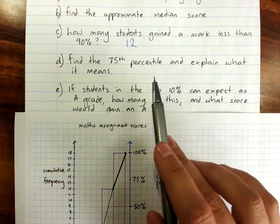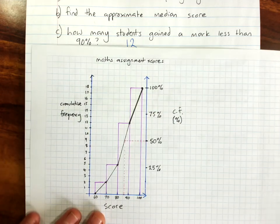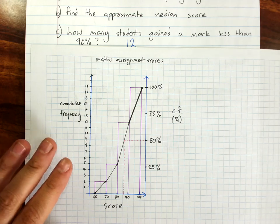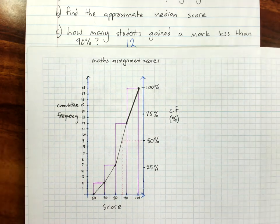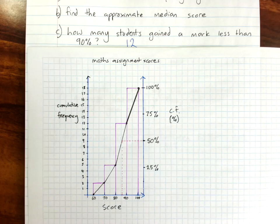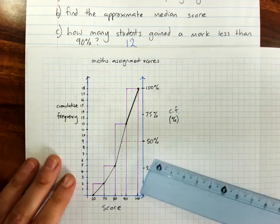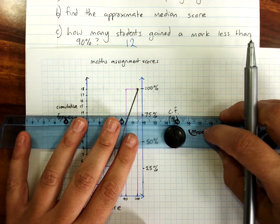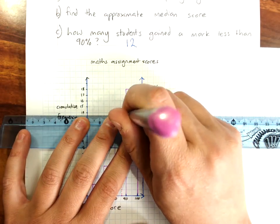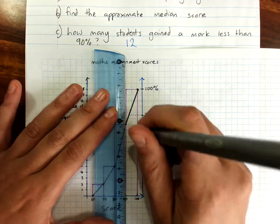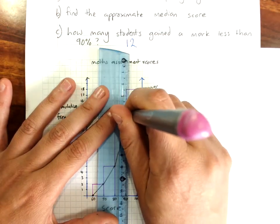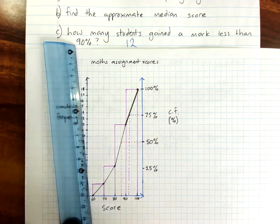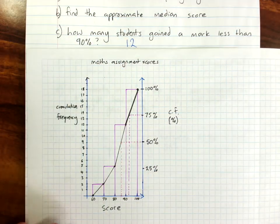Find the 75th percentile and explain what it means. So, the 75th percentile is, where's my ruler going? You find out what score that equates to. And again, you go from 75 across to the ogive and straight down. And that's going to be a score of about 93%.